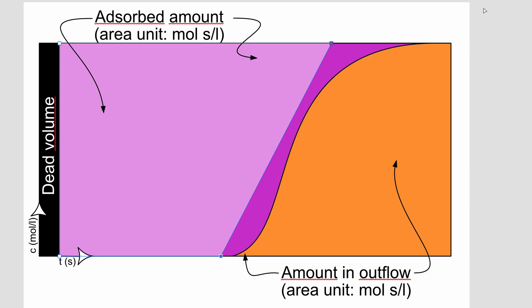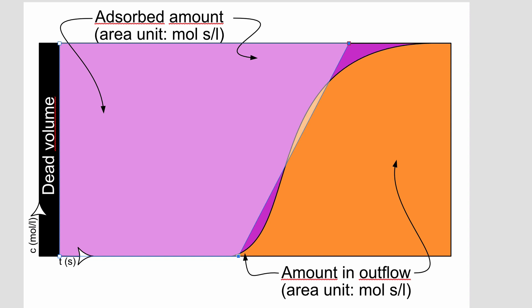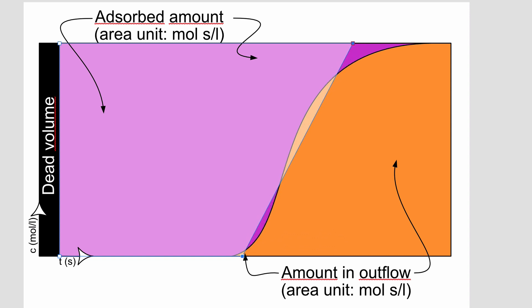As an alternative — for example, if the breakthrough curve looks a bit strange — T star can be found using a trapezoid, again looking for a situation where the sum of the dark purple areas equals the sum of the light orange areas. T star is then the average of the two times identified in that approach.